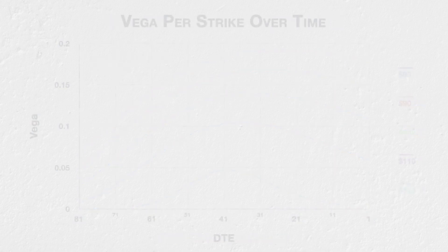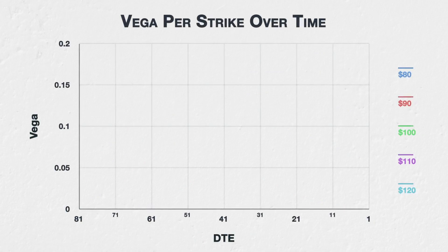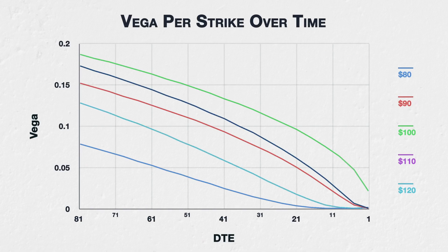Let's now look at 5 specific strikes to illustrate how their vega evolves as time passes. This chart shows the vega of the $80, $90, $100, $110, and $120 strikes. The asset price is $100, and implied volatility is set to 40%. The x-axis now shows the days to expiry, so as we move from left to right on the chart, we can see how the vega changes for each of these strikes as time passes.